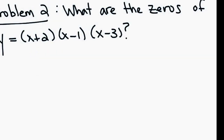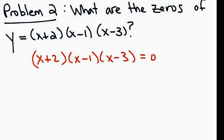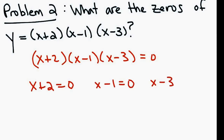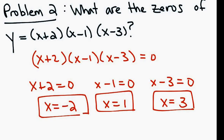So in problem 2, when I ask what are the zeros of y equals x plus 2 times x minus 1 times x minus 3, the zeros mean where does this polynomial equal 0. Notice this is already written in factored form. When it's already written in factored form, we use the zero product property: take all the linear factors, set them equal to 0, and solve. Those are your zeros, solutions, x-intercepts, or roots. You could have also graphed it — if you typed this into your graphing calculator, you would see it hit the x-axis at negative 2, 1, and 3.